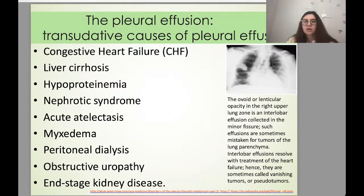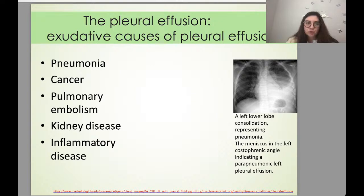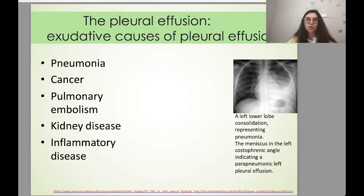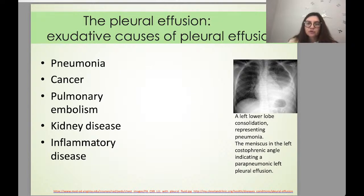Exudative causes: recall from physiology that exudate is inflammatory fluid. Exudative pleuritis is caused by some inflammation. Causes include pneumonia, cancer, pulmonary embolism, kidney disease, or inflammatory disease. On the chest X-ray you can see left lower lobe consolidation representing pneumonia, with a meniscus in the left costophrenic angle indicating parapneumonic left pleural effusion.